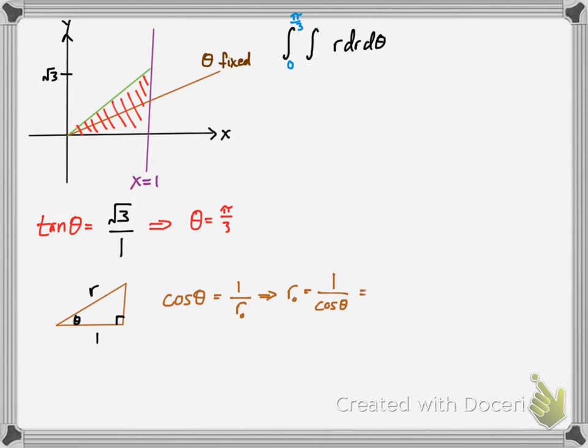We solve for r and get 1 over cosine, which is secant theta. That's the method of solving for the limits of integration here, 0 to secant theta.